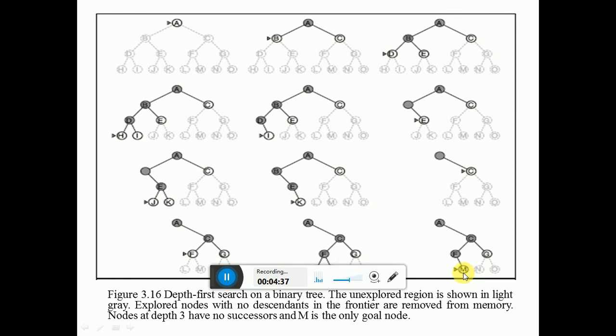Suppose M is the goal node. You start from root node A and expand into B and C. From B, expand into D and E. Then D expands into H and I. When there is no further expansion, return back to B, then move to E. E expands into J and K.